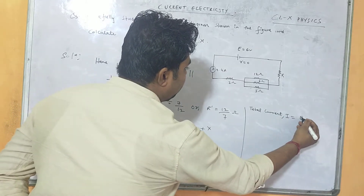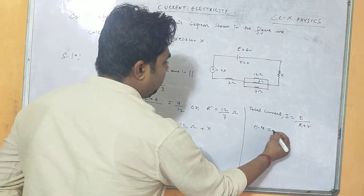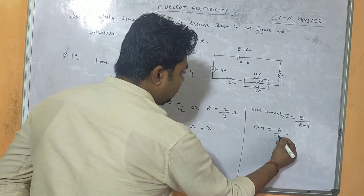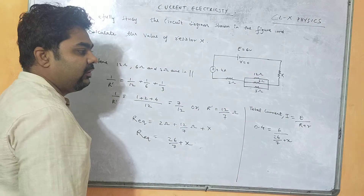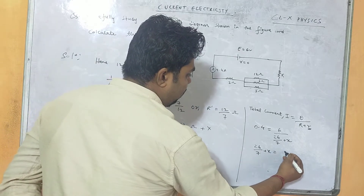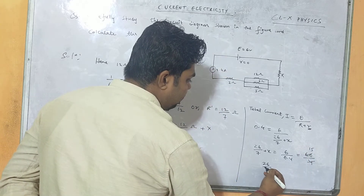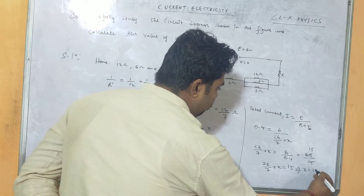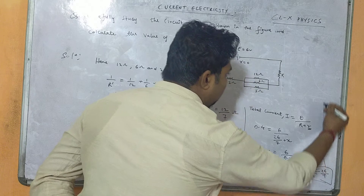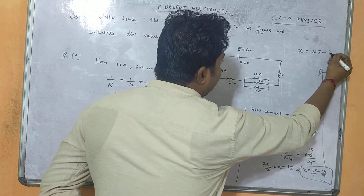Now we apply the formula: total current I = total EMF / total resistance. Total current is 0.4 ampere, total EMF is 6 volt, and total resistance is 26/7 + X (internal resistance is zero). Cross-multiplying: 26/7 + X = 6/0.4 = 60/4 = 15. So X = 15 − 26/7 = (105 − 26)/7 = 79/7.